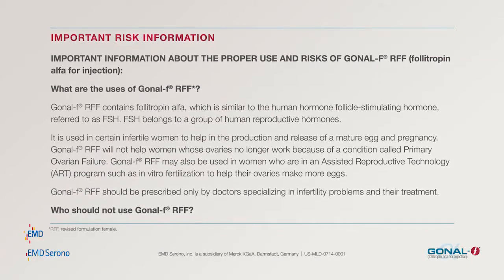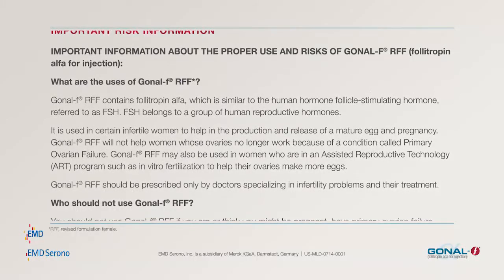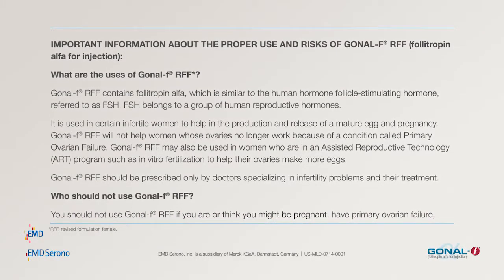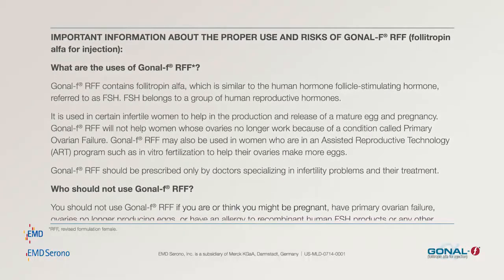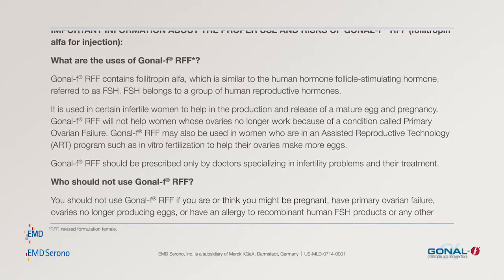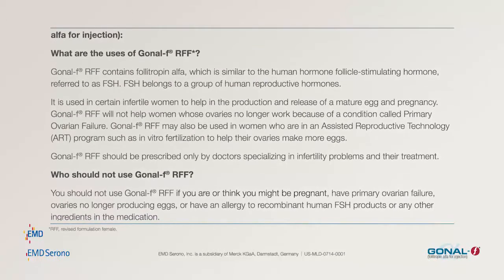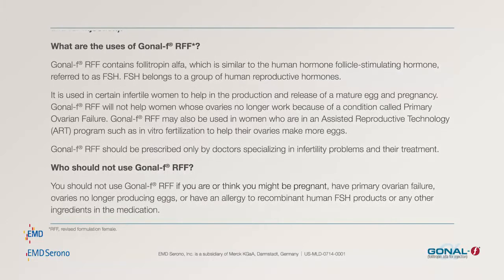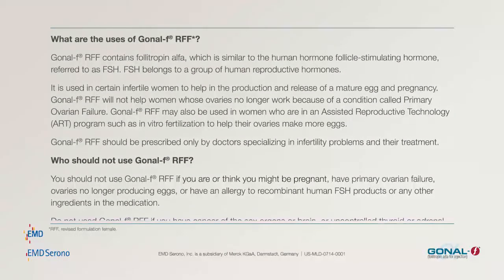Important information about the proper use and risks of Gonal F RFF follitropin alfa for injection. What are the uses of Gonal F RFF? Gonal F RFF contains follitropin alfa, which is similar to the human hormone follicle-stimulating hormone, referred to as FSH. FSH belongs to a group of human reproductive hormones. It is used in certain infertile women to help in the production and release of a mature egg and pregnancy.